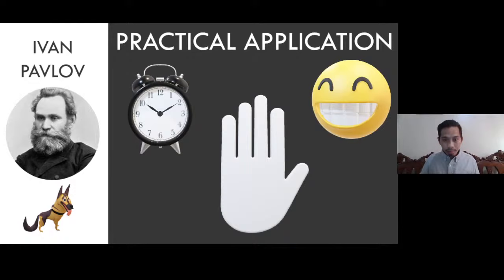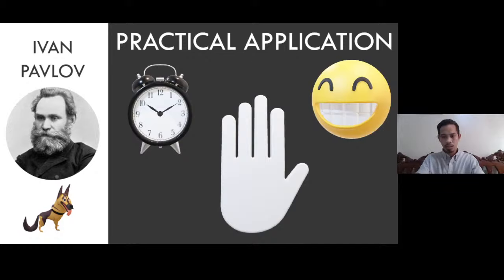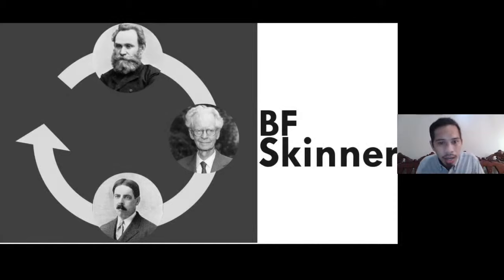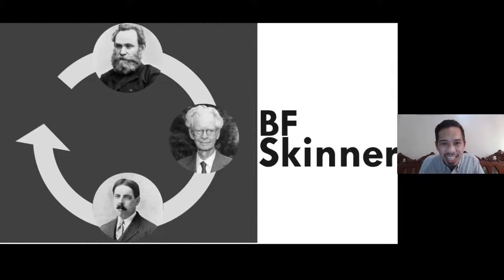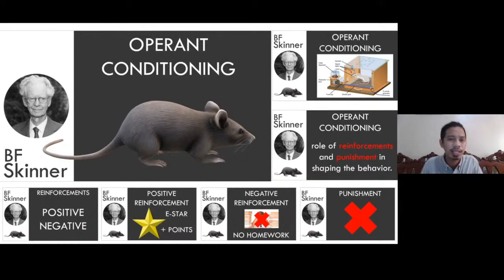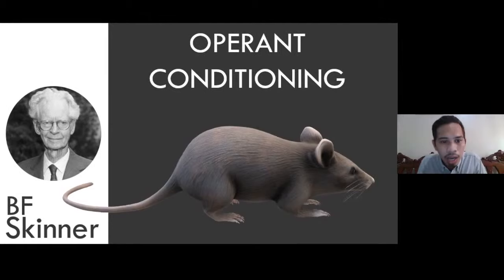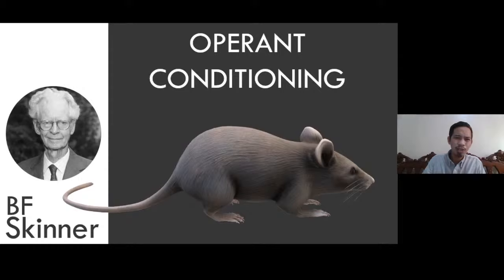That covers Ivan Pavlov's classical conditioning — remember that as our first code: classical. Next, BF Skinner is known for operant conditioning. If classical conditioning used a dog, operant conditioning used a rat. How do we apply operant conditioning in the classroom? First let's learn the experiment.